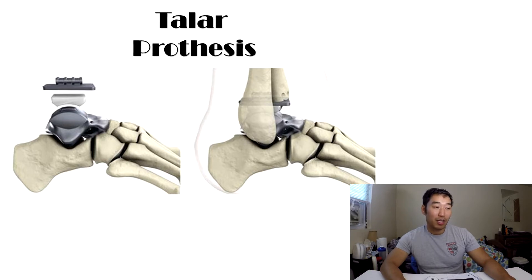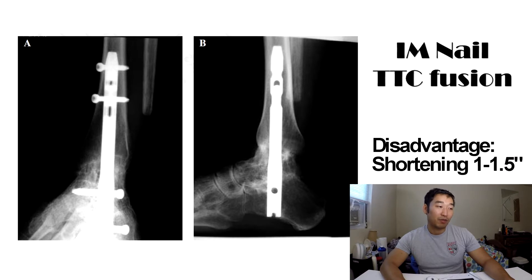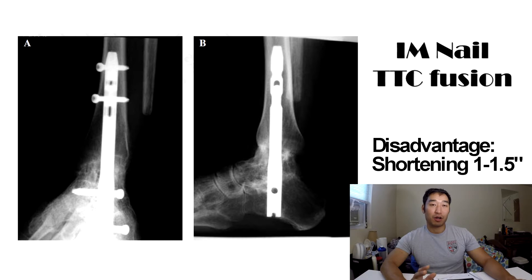For fusion, one study used an intramedullary nail approach. They made a medial incision and placed a retrograde IM nail for tibiotalocalcaneal fusion after removing necrotic talar bone. Post-operatively, patients were placed in a splint for one to two weeks, then a protected non-weight-bearing fiberglass cast for six to seven weeks, followed by protected weight bearing for another six to seven weeks. Twelve out of 14 patients achieved complete fusion, and two patients had a stable pseudoarthrodesis — the bone itself didn't fully fuse, but surrounding soft tissue, including fibrocartilaginous tissue, provided a stable enough structure for weight bearing.